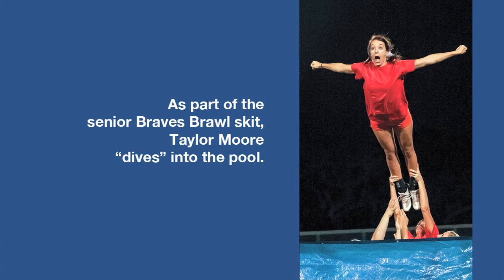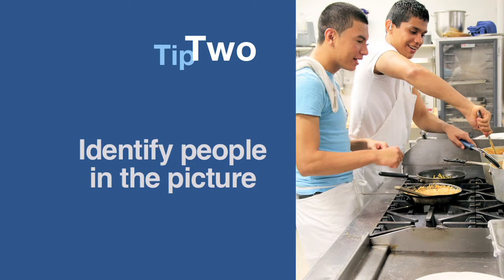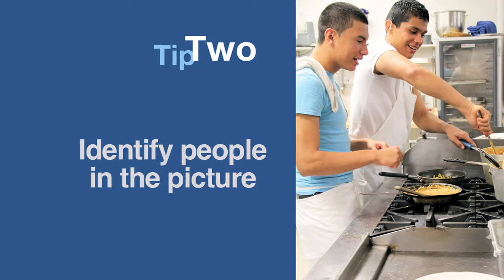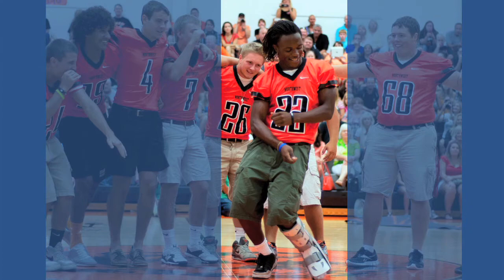Tip two: identify people in the picture. Generally, identify the center of visual interest — those in the picture who are important to the telling of the story. For example: 'In their food preparation and nutrition class, senior Jose Rodriguez stirs queso sauce as junior Nathaniel Pagan cooks an omelet.' Sometimes that might not be as simple as it seems. Your editors will have to decide how many people you'll identify — four, five, seven, or just the people in focus. Perhaps if there's too many people in the picture, you need to crop it tighter. But what do you do in a photo that has seven people you can see? If we crop out the players, it takes away from the action. One way might be to make your description clear enough that everyone would know who you're identifying.